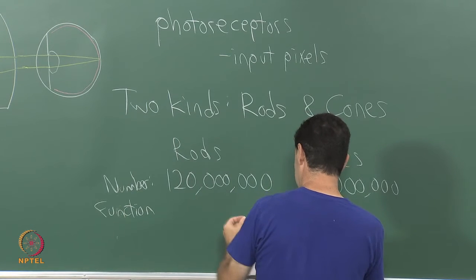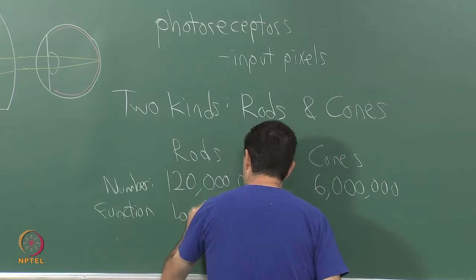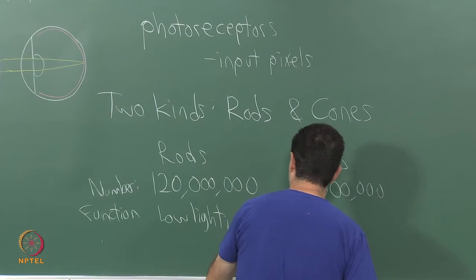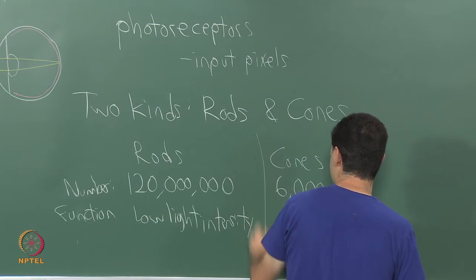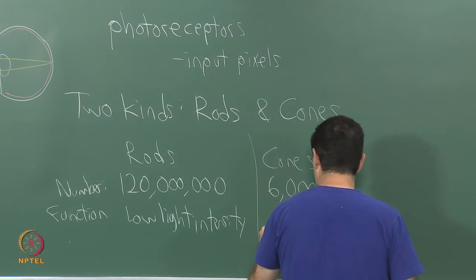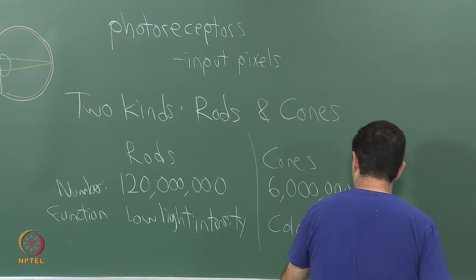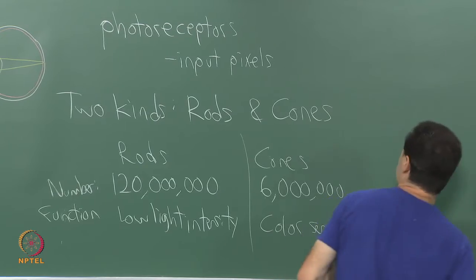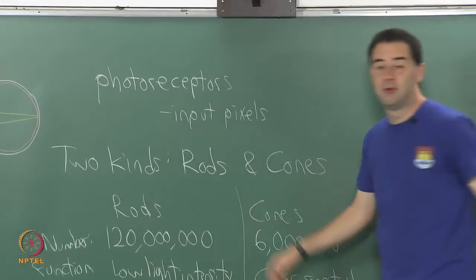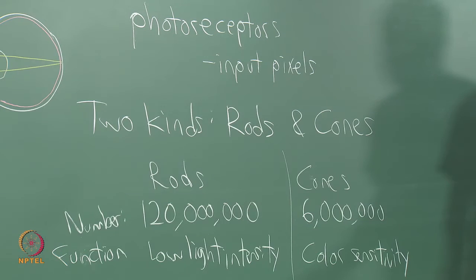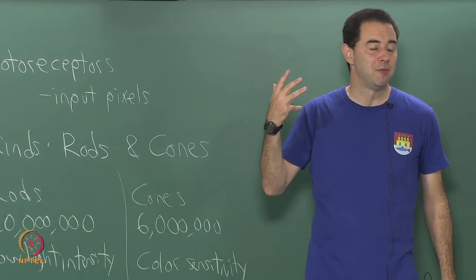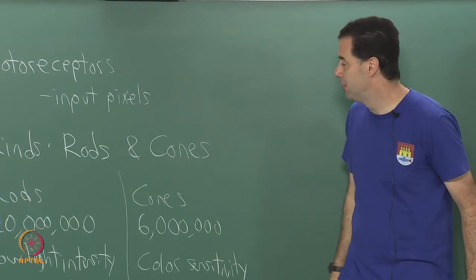The function of these different types is considerably different. Rods are for low light intensity, and the cones are for color sensitivity. This separation of different types of photoreceptors has a profound impact on the way that we perceive brightness levels, color, all sorts of things, as we process visual information and get to the perception of vision—this fundamental separation.